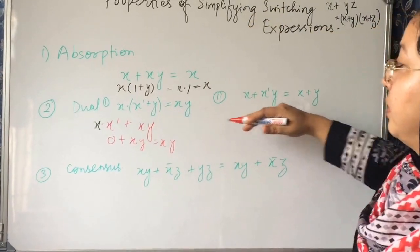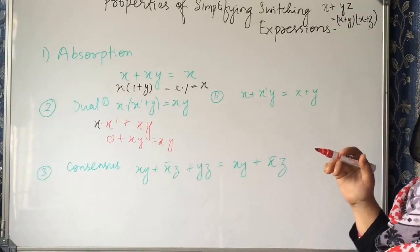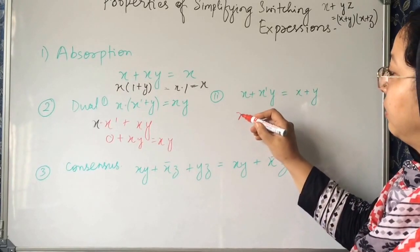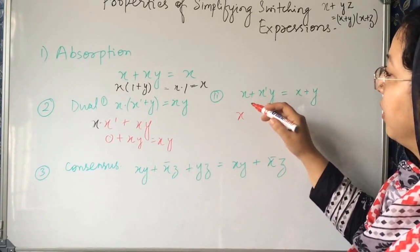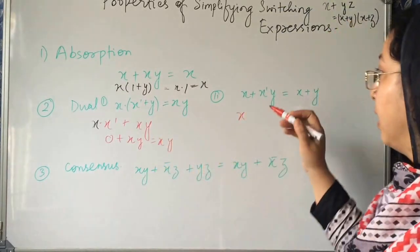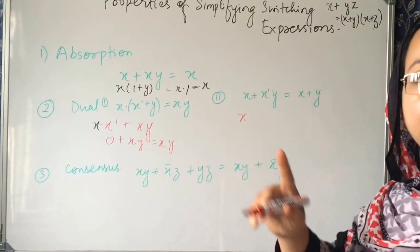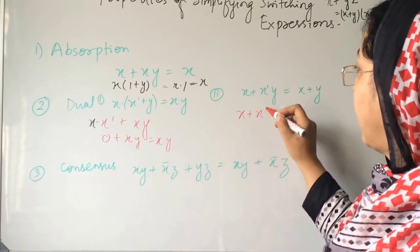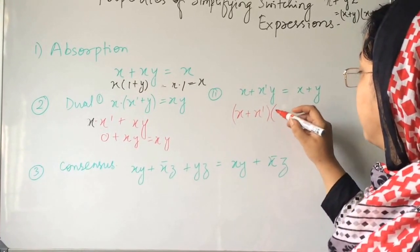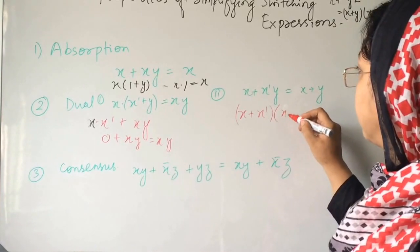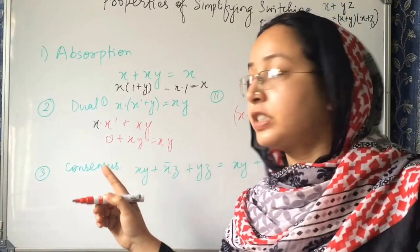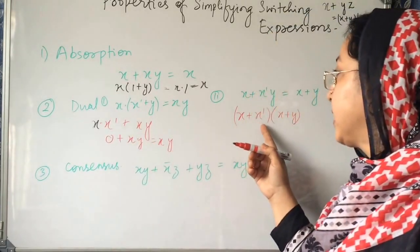Now, second property of Dual is x plus x dash y is equal to x plus y. How we can prove it? Now for this you can use this property of expanding plus over dot. Plus is distributive over dot.